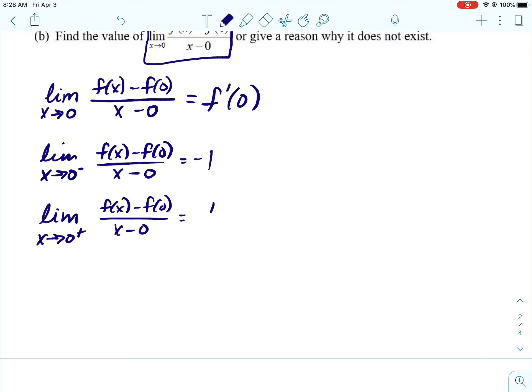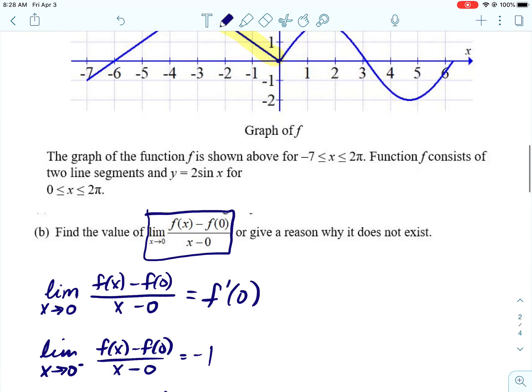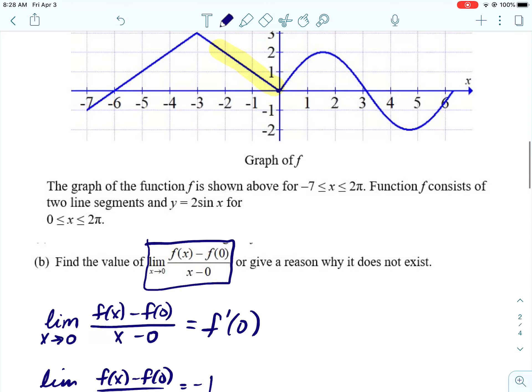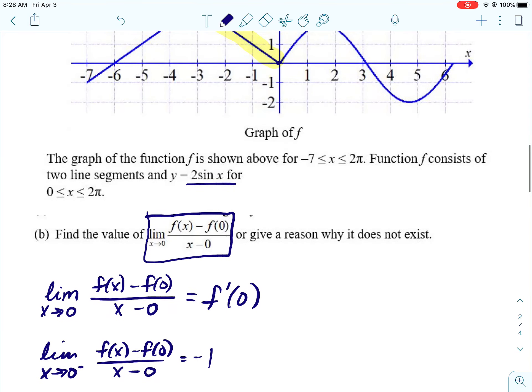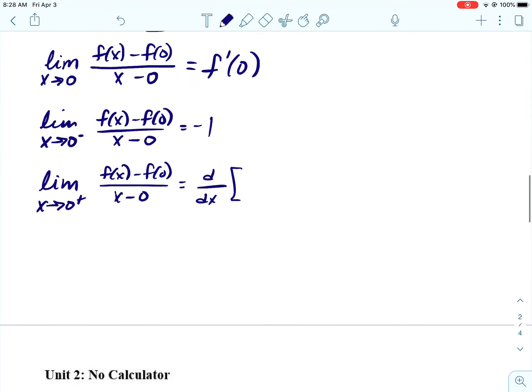And then the limit as X approaches 0 from the right of this expression just means the derivative of that right side function. And the right side function is 2 sine of X. And we are going to evaluate that when X is 0.